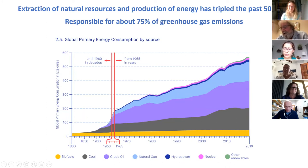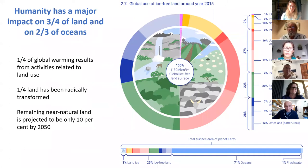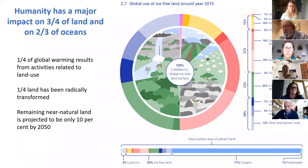We have literally transformed our land. Humans have impacted at least three quarters of the Earth's ice-free land surface. One quarter of the land has been radically transformed. By 2050, it is projected that only 10% of land will not have been transformed by human activity. These land use practices account for about one quarter of greenhouse gas emissions — CO2 from deforestation, and methane and nitrous oxide from agricultural practices.